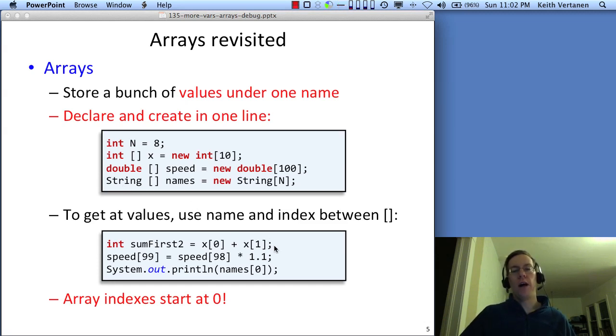Whenever you want to pull out a value, you've got to use the variable name, square brackets, and then an integer index. Either you need to use an actual literal number, like putting in a zero or a one or a 99 or a 98. Or as we'll see in the next slide, you can actually use a variable index. Remember, array indexes must start at zero. Speed 99 is okay. Speed 100 is not okay. Zero counts as one of the positions, so the valid indices of the speed array are zero, bracket zero, bracket one, through bracket 99.